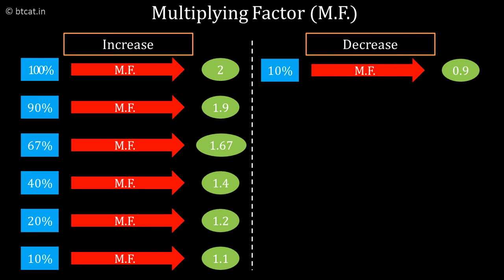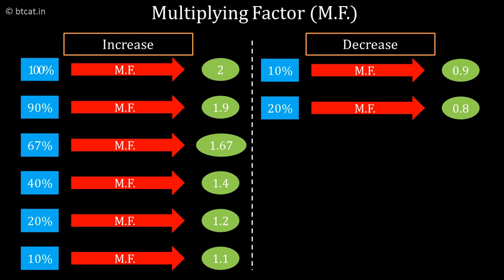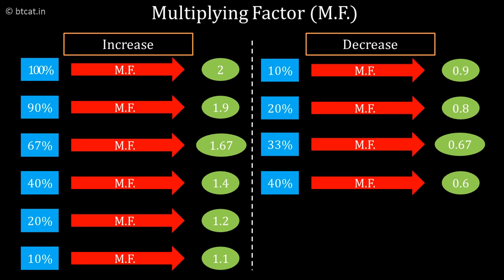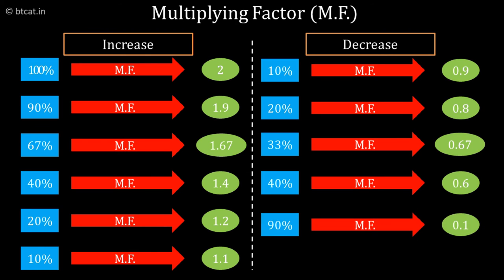The multiplying factor is also defined for percentage decreases. If there is a 20% decrease, the multiplying factor would be 0.8. If there is a 33% decrease, the multiplying factor would be 0.67, and so on.